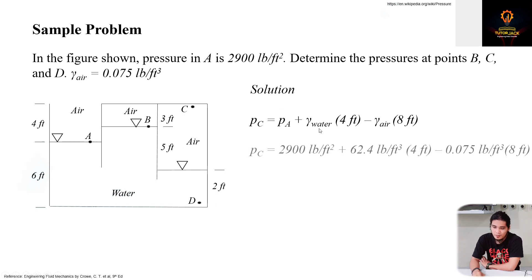And then let's evaluate. Let's substitute the given values. We have A is 2,900. This one is unit weight of water, which is 62.4, and then we have the 4 feet of elevation or change in elevation.